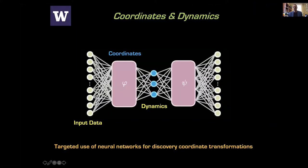I want to start with a perspective. The way I'm framing everything in this talk is around two concepts: discovering coordinates and dynamics jointly. This is nothing new — we've been doing this in physics forever — but now we have new tools to do it. I'm going to think about taking input data, learning some coordinate transform into some dynamics, and building models there, using deep neural nets and other methods.